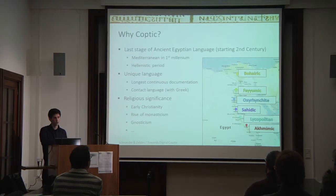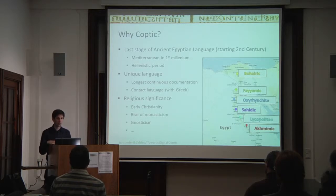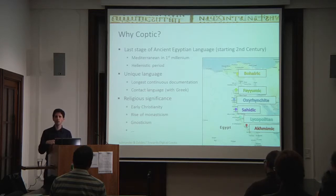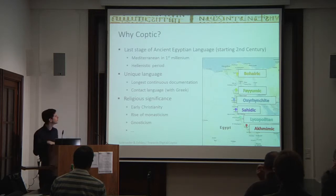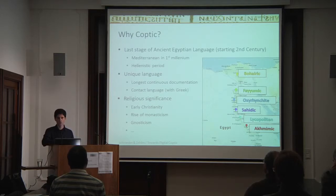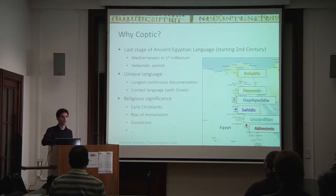Coptic also has great religious significance. It is the language of the Coptic Church, and it was there when Christianity came about before it was a state religion. For very early Christianity, some of the most interesting texts are available in Coptic that you will not find in other languages — particularly if you're interested in the rise of monasticism, which is very much an Egyptian phenomenon. If you're interested in understanding why people started living together in the koinobion and what the rules about monastic life were at the beginning, the sources are in Coptic. Also for non-canonical Christianity, there are many interesting texts about Gnosticism and later variants available only in Coptic.